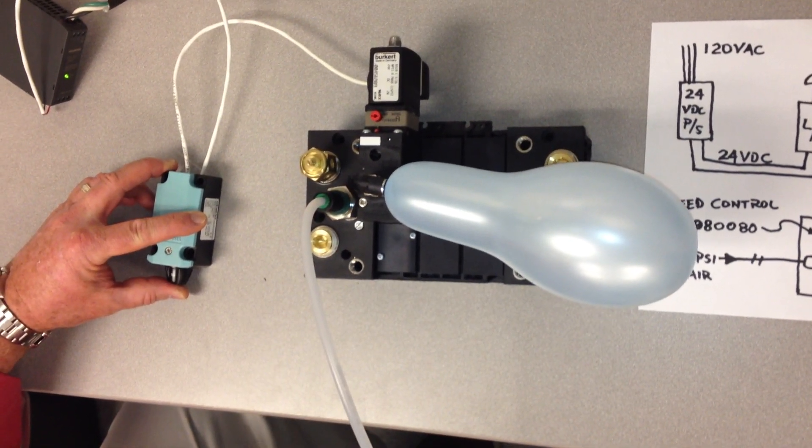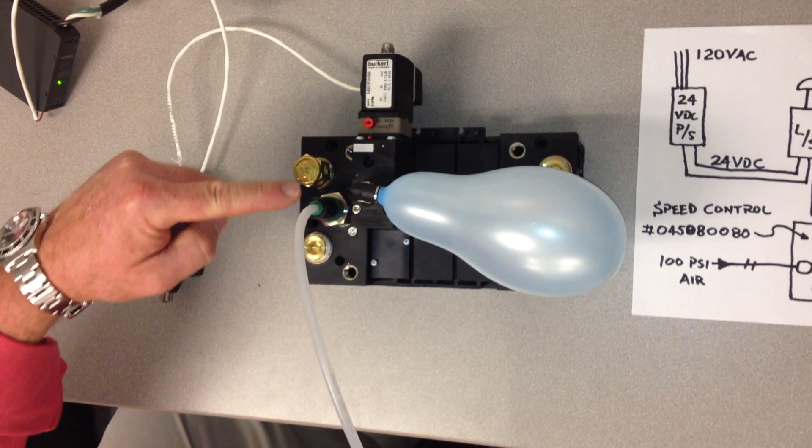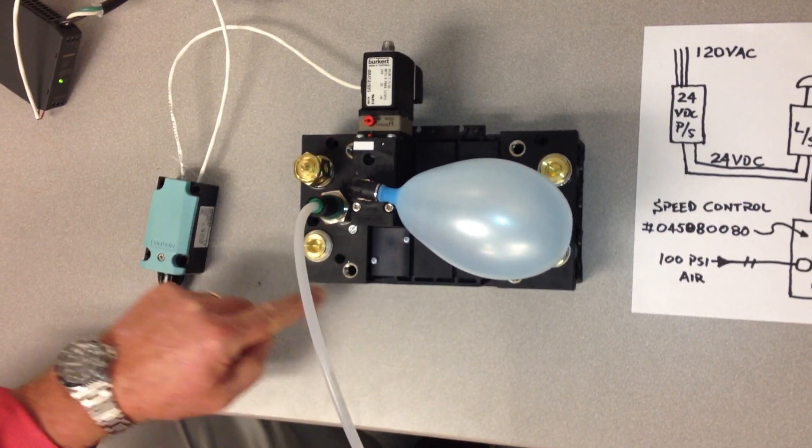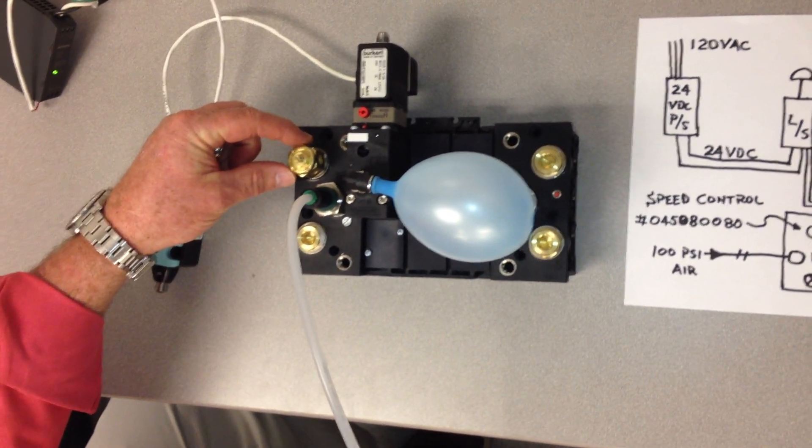When I release the limit switch, de-energize the solenoid, air bleeds back down through the solenoid, through the manifold, and out through the speed control valve.